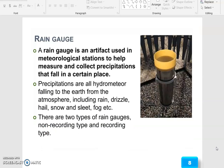The rain gauge. See the picture. This is a rain gauge machine. A rain gauge is an artifact used in meteorological stations to help measure and collect precipitations that fall in a certain place. The precipitations are all hydrometeors falling to the earth from the atmosphere, including rain, drizzle, hail, snow and sleet, fog, etc.